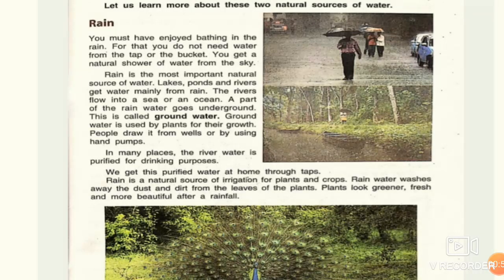We all like rain and a rainy day. Rain is a major component of the water cycle and is responsible for most of the fresh water on the earth. Rain is very important because it is responsible for most of the fresh water on earth. Water is essential for us — we cannot live without it. One of the main natural sources of water on earth is rain.